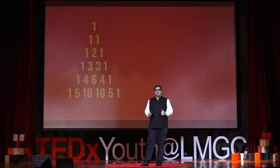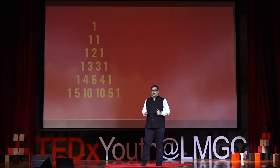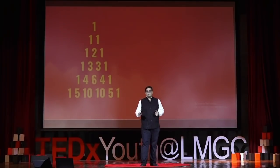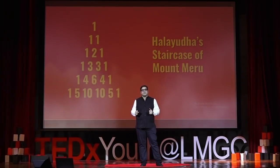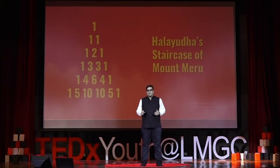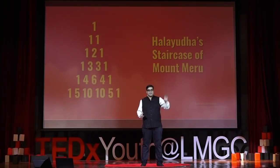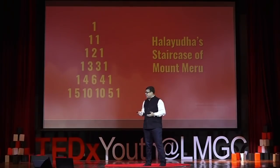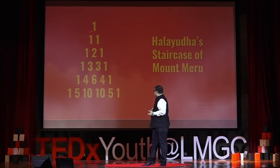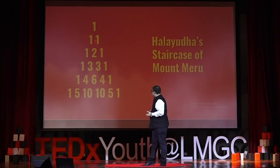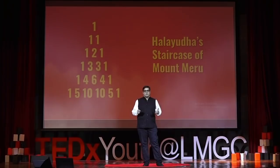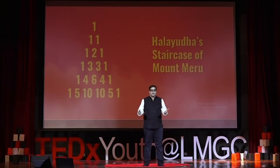Have you seen this triangle before? This triangle is actually called Halayuta's Staircase of Mount Meru, but it is most popularly known as Pascal's Triangle. There are many secrets inside this triangle. Looking at the first column, we have all ones. The counting numbers 1, 2, 3, 4, 5 also appear. It was founded by an Indian mathematician named Halayuta.